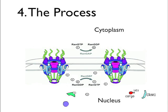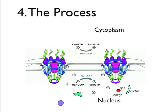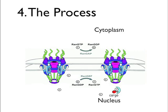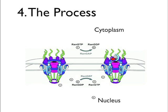For nuclear export, the cargo — the protein to be exported — must contain a nuclear export signal or NES. That NES is recognized by the exportin, in this case CRM1. However, CRM1 by itself cannot recognize the nuclear export signal; it must first recruit RAN-GTP. RAN-GTP then allows CRM1 to recognize the NES on the cargo and form a tight complex. This complex of exportin, cargo, and RAN-GTP locates in close proximity to the nuclear pore complex and passes through it.